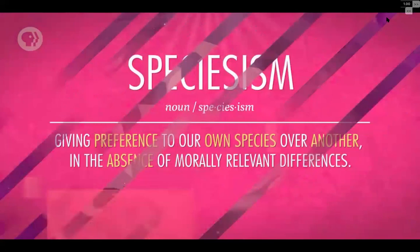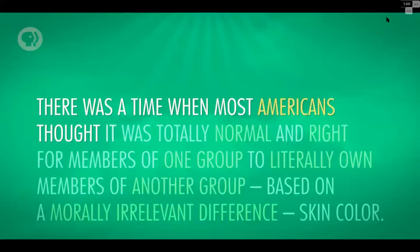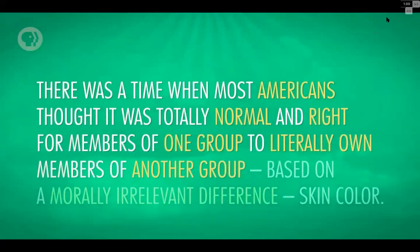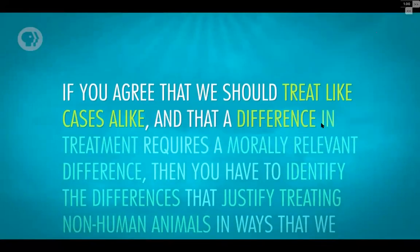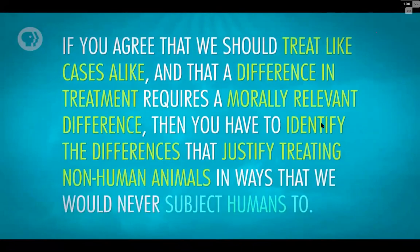Australian philosopher Peter Singer uses the word speciesism to describe giving preference to our own species over another in the absence of morally relevant differences. Singer reminds us that there was a time when most Americans thought it was totally normal for members of one group to literally own members of another group based on a morally irrelevant difference — skin color. Singer predicts there will be a time when our descendants look back on our treatment of non-human animals with the same horror. In a nutshell, Singer says: if it's not okay to do it to a human, it's not okay to do it to an animal either. To justify treating animals differently, you have to identify the morally relevant differences.